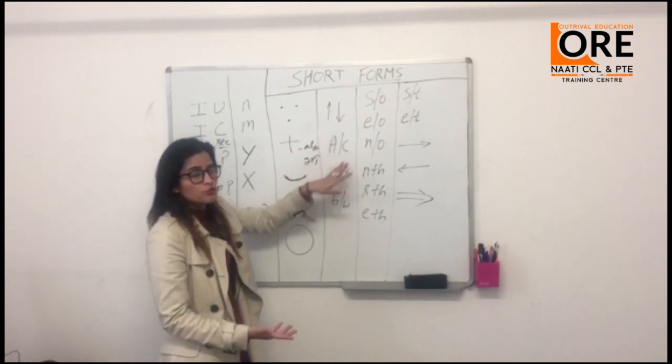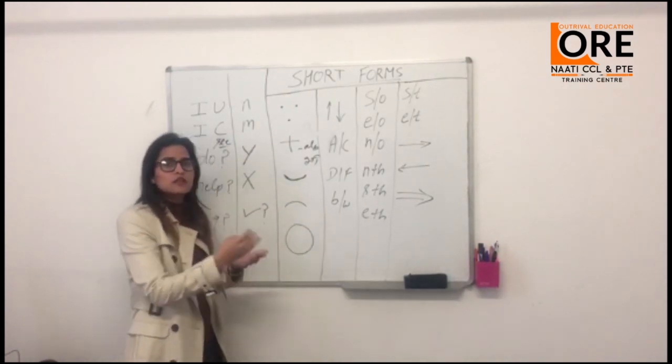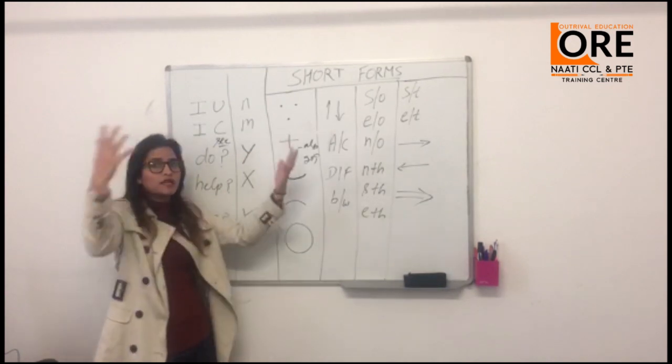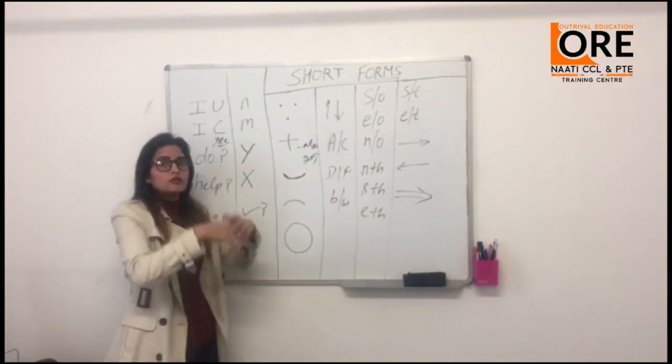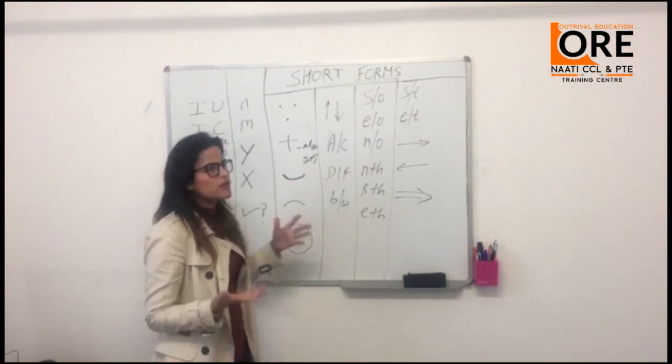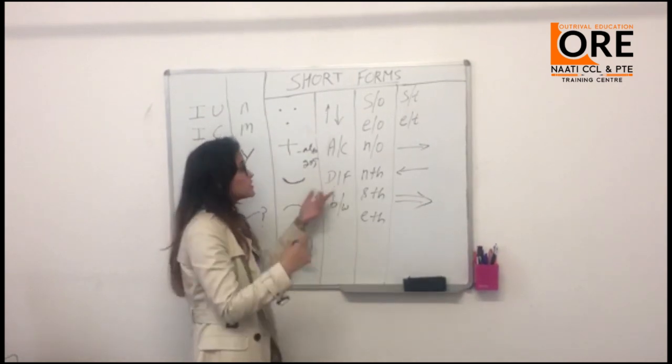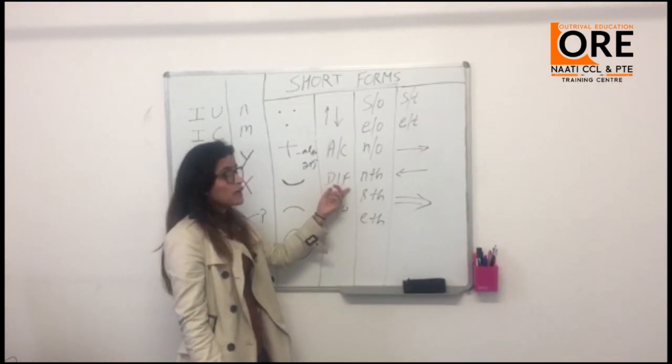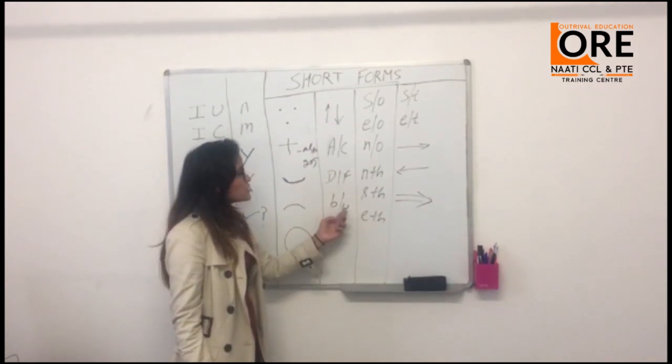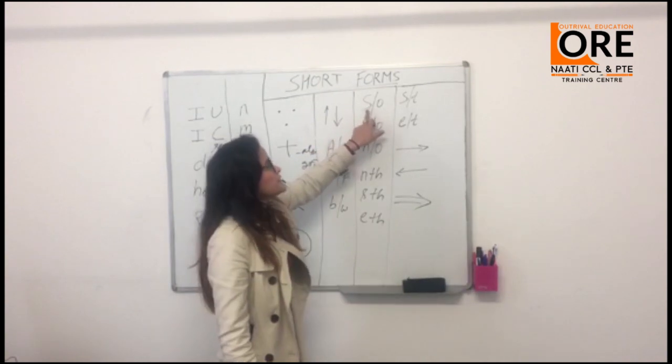This means according to. According to in Hindi means 'ke anusar'. According to policies, according to rules, according to immigration department - 'aaprawasin vibhag ke anusar'. According to rules - 'niyamon ke anusar'. D slash F means difference. When students use this, you must point out clearly so they know it's for difference - D slash F meaning difference or it can be difficult also. B slash W means between.